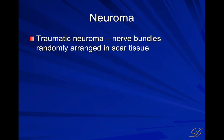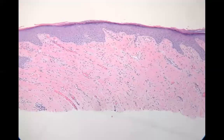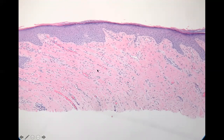A traumatic neuroma is not exactly a tumor. It is just a proliferation of mature nerve bundles — a tangle of nerve bundles when you damage a nerve in trauma or a procedure. These can be seen as randomly scattered nerve bundles in scar tissue.